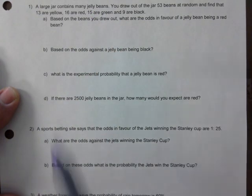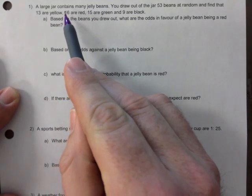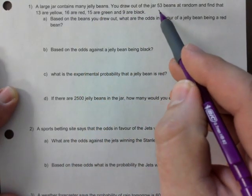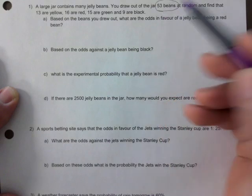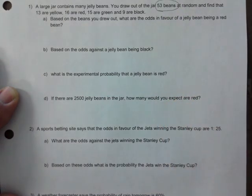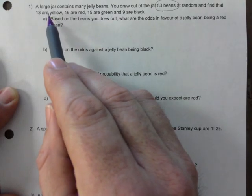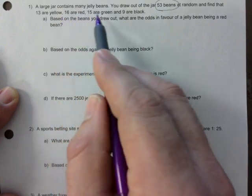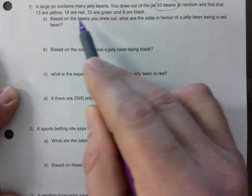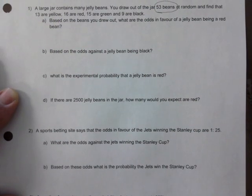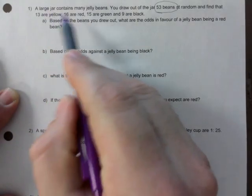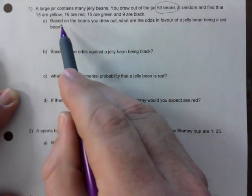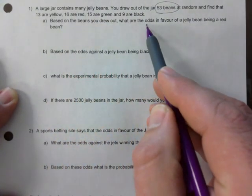A large jar contains many jelly beans. You draw out of a jar of 53 beans — they give you the total, so you don't have to figure that out. They give you the total and each individual count, so when it's set up like that you can be asked a lot of questions, because you know not only the total but also the individual makeup. Based on the beans you drew out, what are the odds in favor of a jelly bean being red?